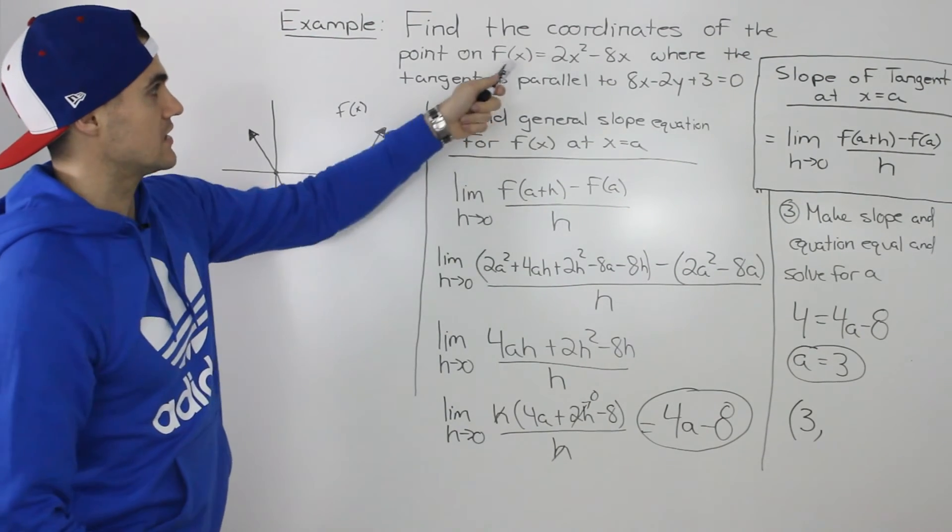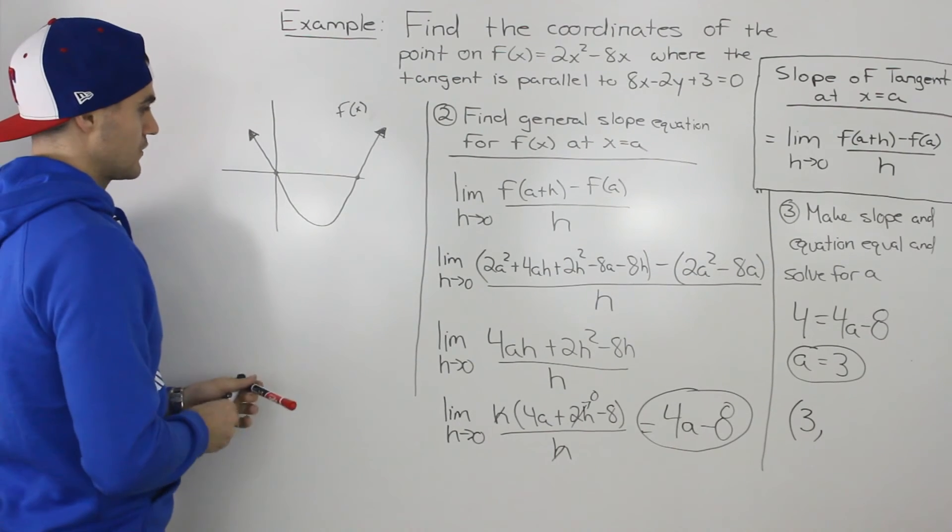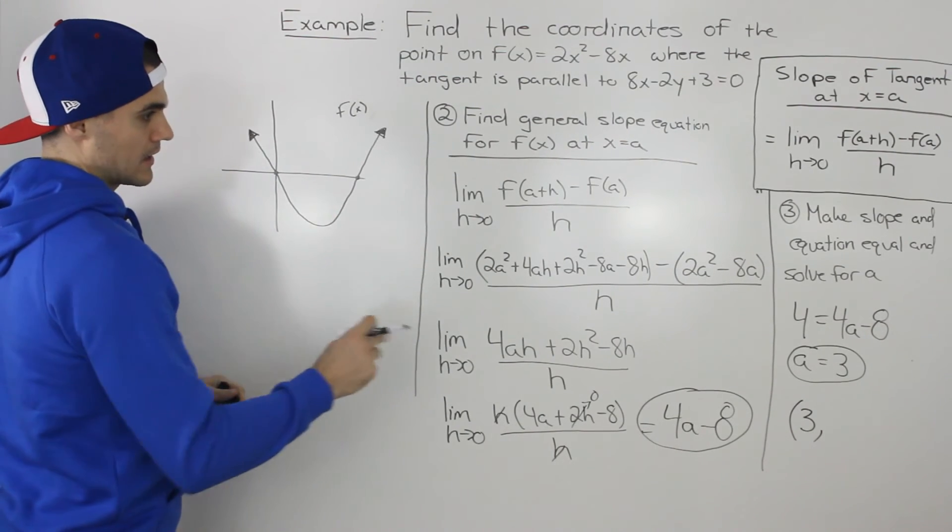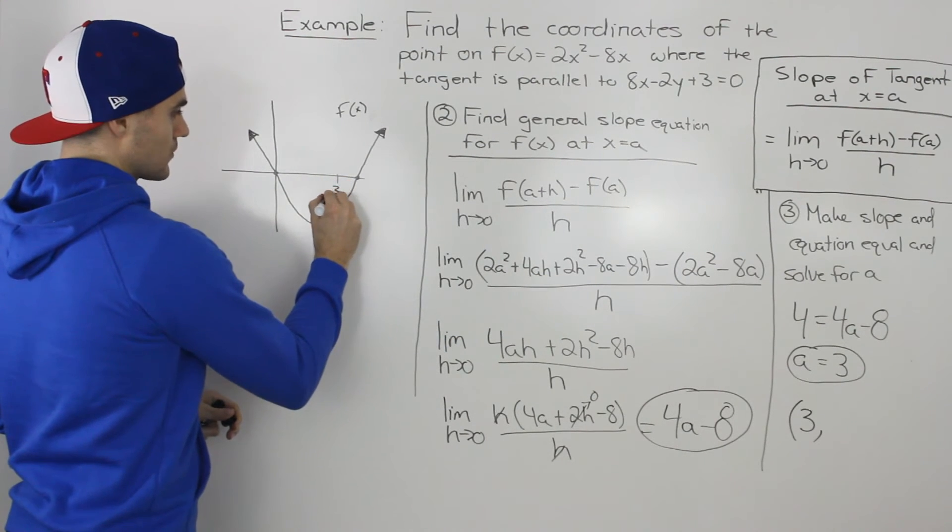So to show this visually, if we take this function, 2x² - 8x, and we graph it, we would have intercepts at 0 and 4. And basically, at an x value of 3, which would be around here,